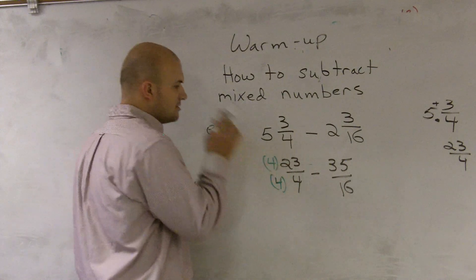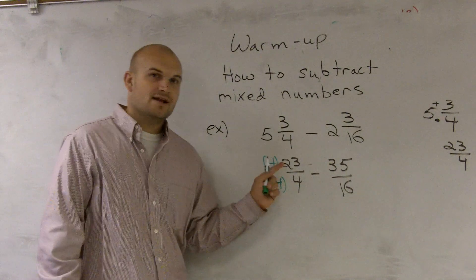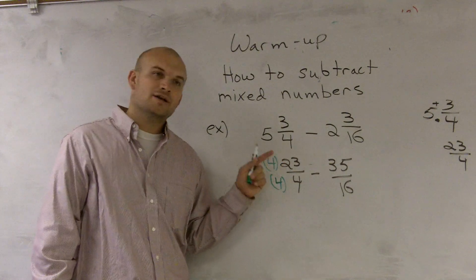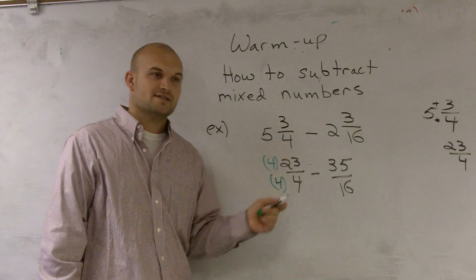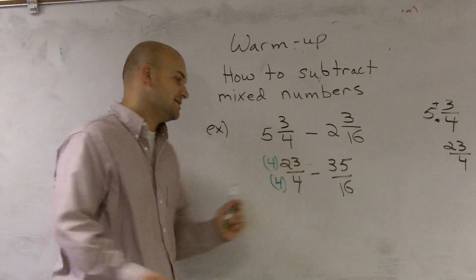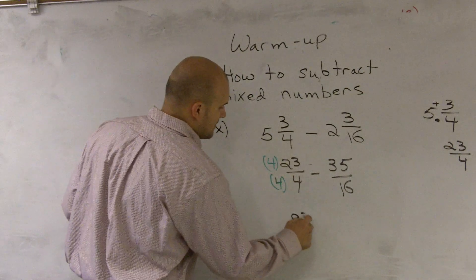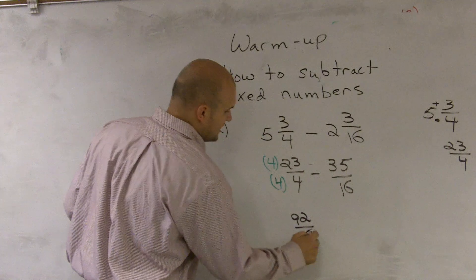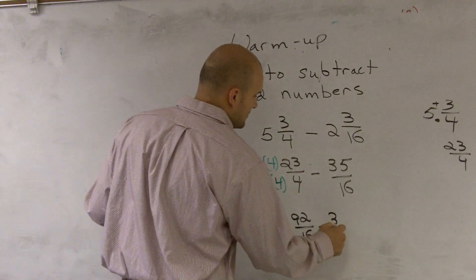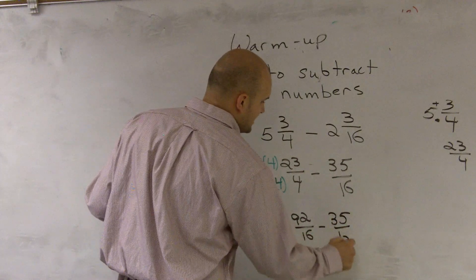So I do 4 times 23, and if I don't have a calculator, I'm thinking in my head, well I know 2 times 23 is 46, and then 46 times 2 would be 92. So I have 92 over 16 minus 35 over 16.